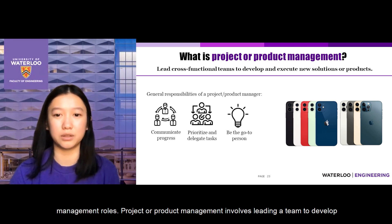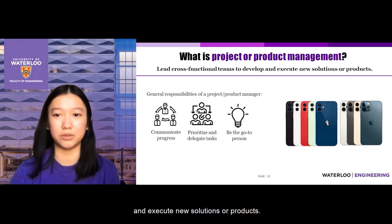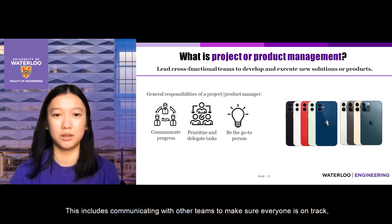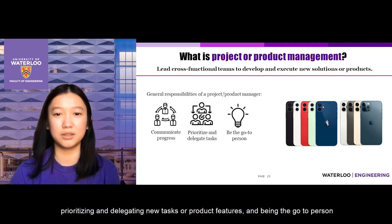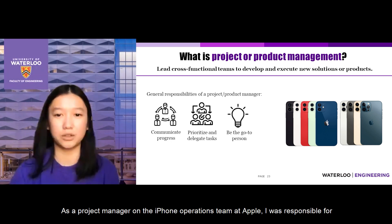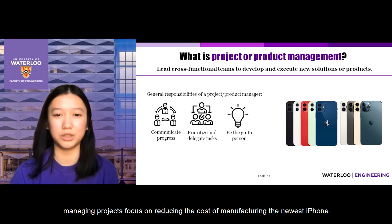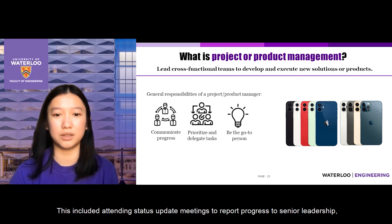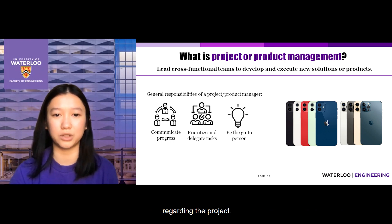Many management engineering students and grads also work in project or product management roles, which involves leading a team to develop and execute new solutions or products. This includes communicating with other teams to make sure everyone is on track, prioritizing and delegating new tasks or product features, and being the go-to person for answering questions about the project or product. As a project manager on the iPhone operations team at Apple, I was responsible for managing projects focused on reducing the cost of manufacturing the newest iPhone, including attending status update meetings, managing deadlines with different teams, and being accountable for answering questions regarding the project.